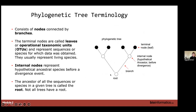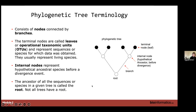The terminology for describing trees: trees usually have a root, branches, nodes, and terminal nodes called leaves. These can also be called operational taxonomic units, though that term has largely been replaced with amplicon sequence variants in many cases. The leaves are usually the living species or things you're analyzing, and the internal nodes represent some ancestral species before a divergence event. Not all trees have a root.